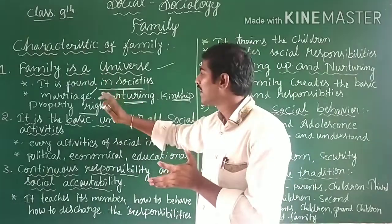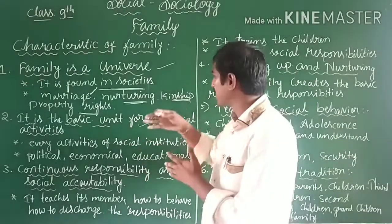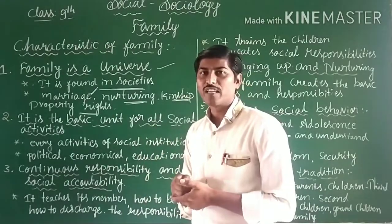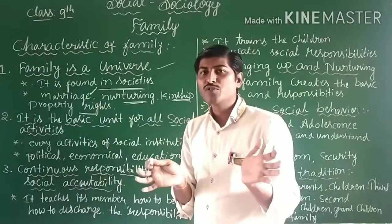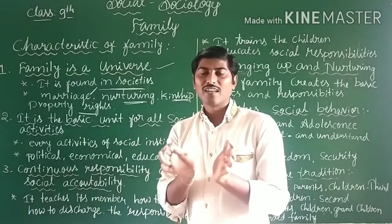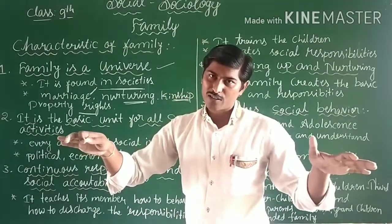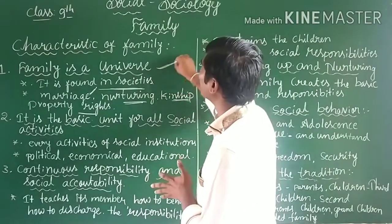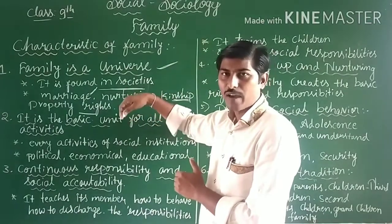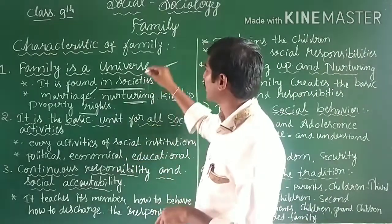Marriage is part of the family pattern, as is nourishing the baby and blood relations among siblings. Siblings with blood relations live in the same family and share property rights. All members of the family live under the same place and same roof. That is why the family is universal — it is found in every society, everywhere.